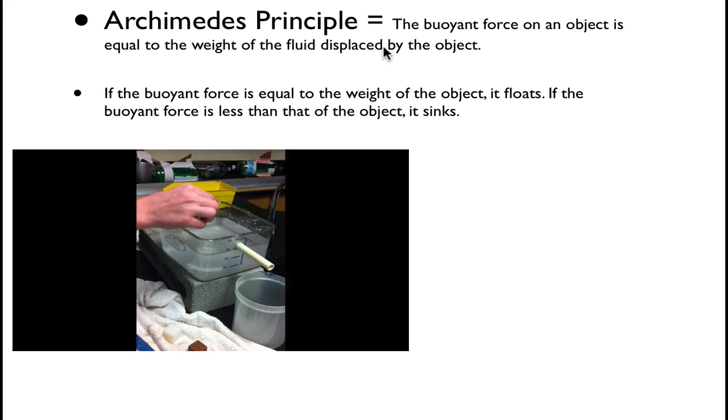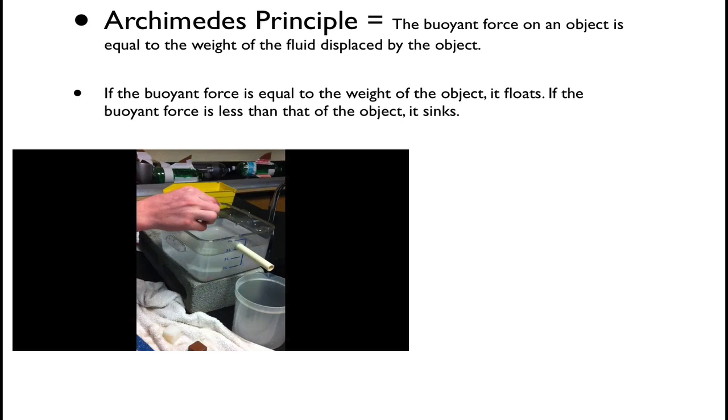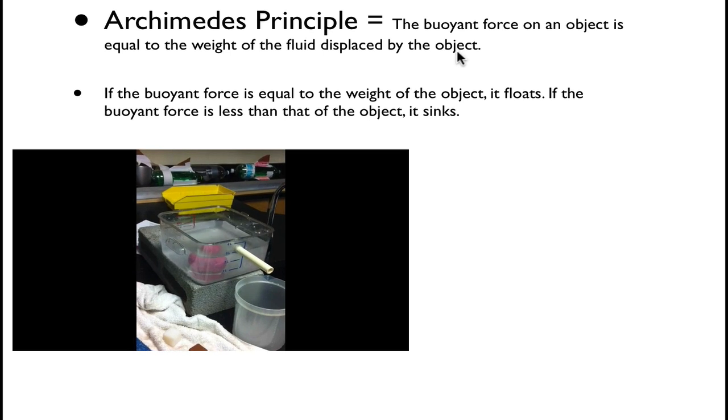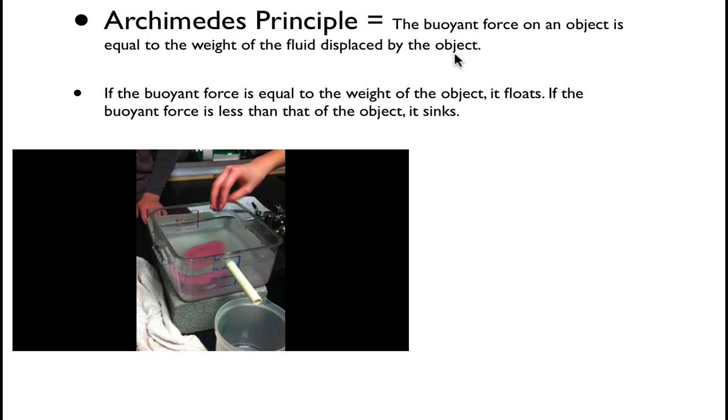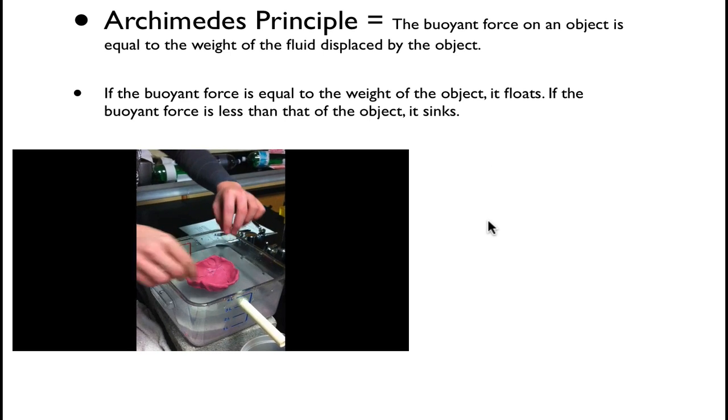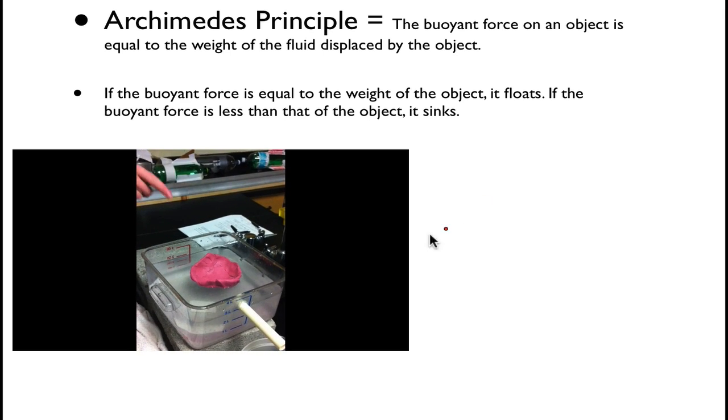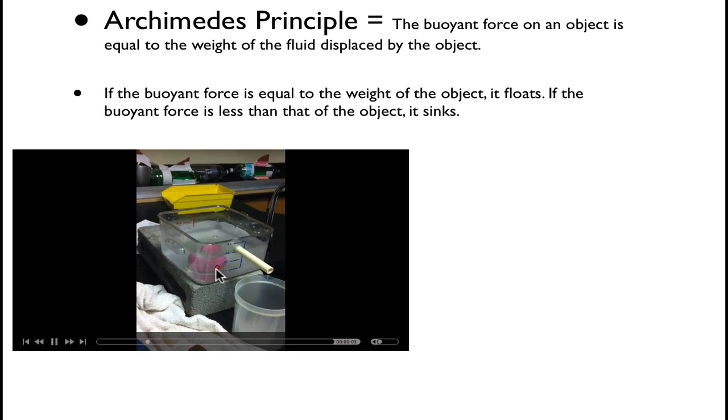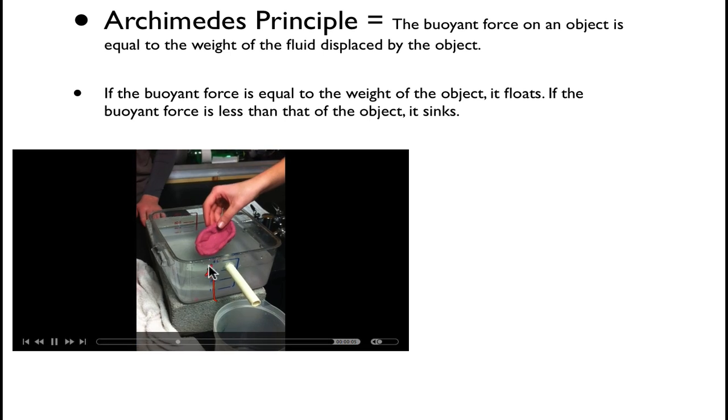So let's get started talking about these principles. Archimedes' principle tells us that the buoyant force on an object is equal to the weight of the fluid displaced by the object. So in this case, we have buoyant force. Buoyant force is how much a liquid or fluid is actually exerting a force back onto that object. So if we had something like what's going on here, the water is actually pushing up on that object.